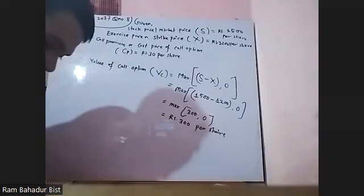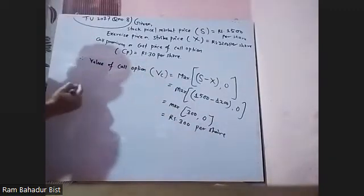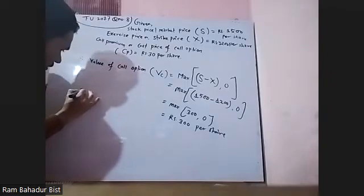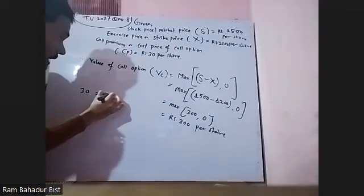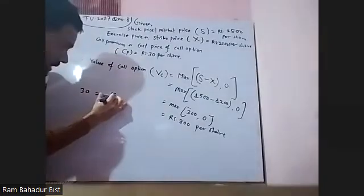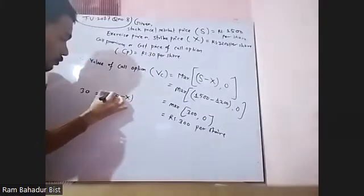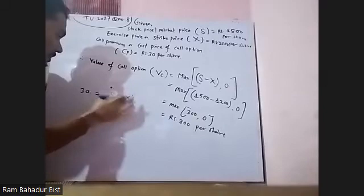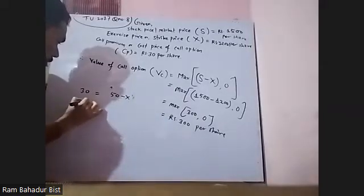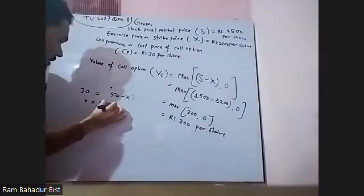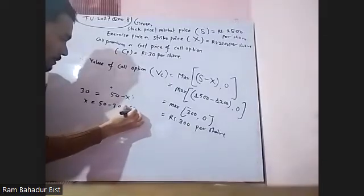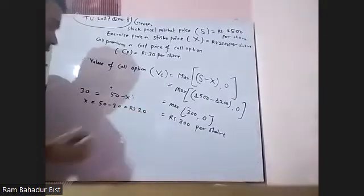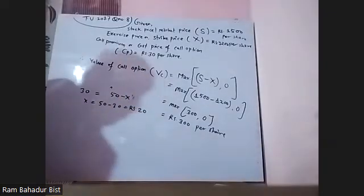This is 20 minus 30. And S equals 50. 50 minus X equals zero. And X equals 20 minus 30. What's the value of 20? 20 means 10.